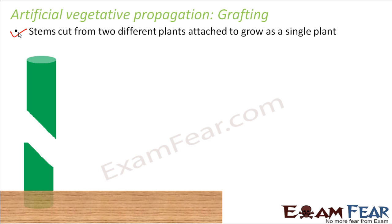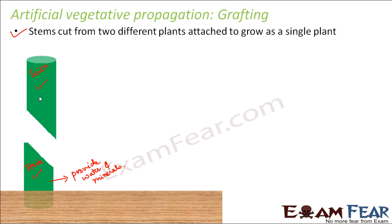So let us see exactly how this happens. These are the two parts taken from two different plants — this is the stem from one plant, and this is the stem from another plant. The part taken from one plant is called the scion, and the part taken from the other plant is called the stalk, which provides water and minerals to the plant. So together, the scion and stalk will make a new plant.